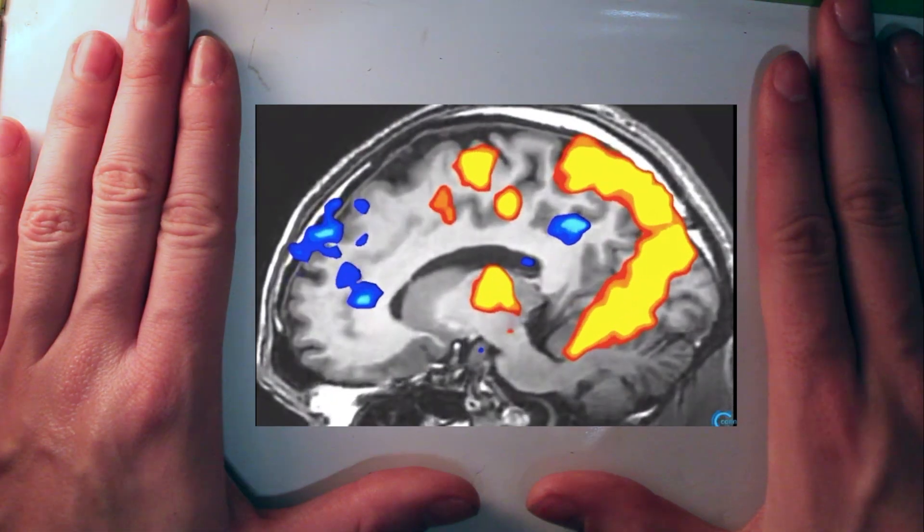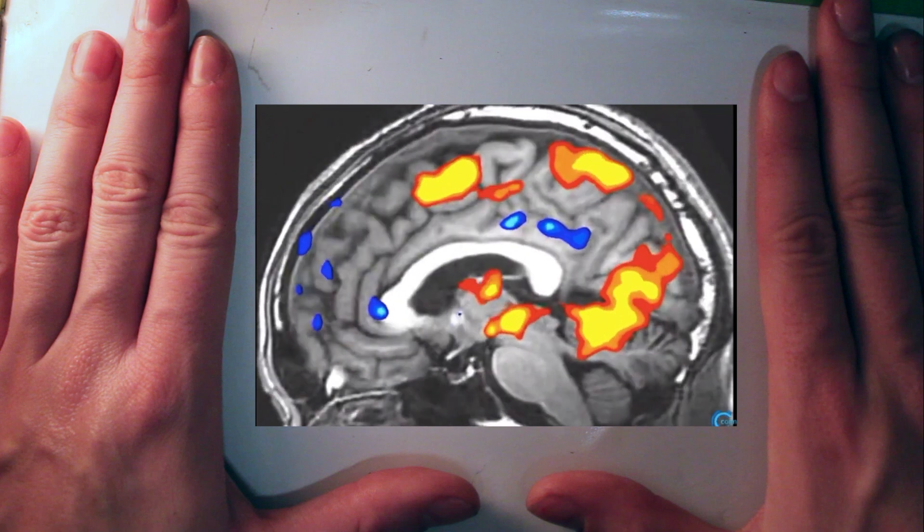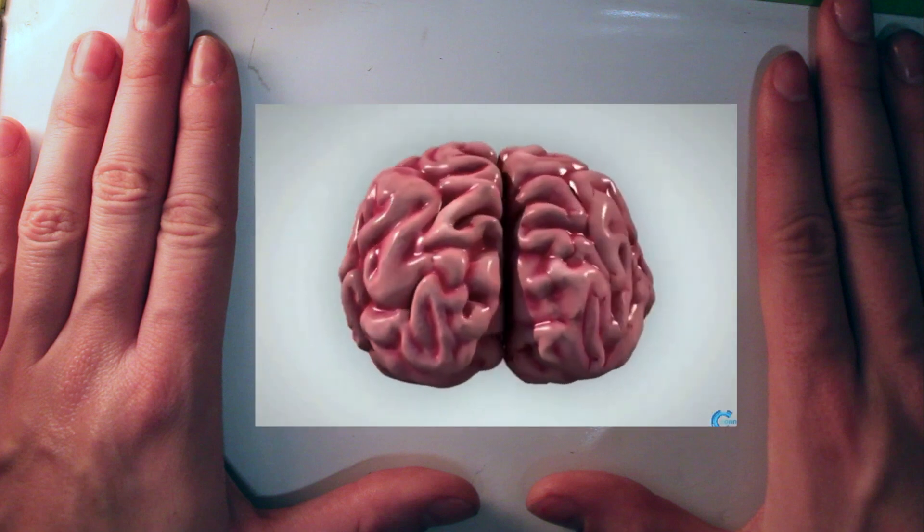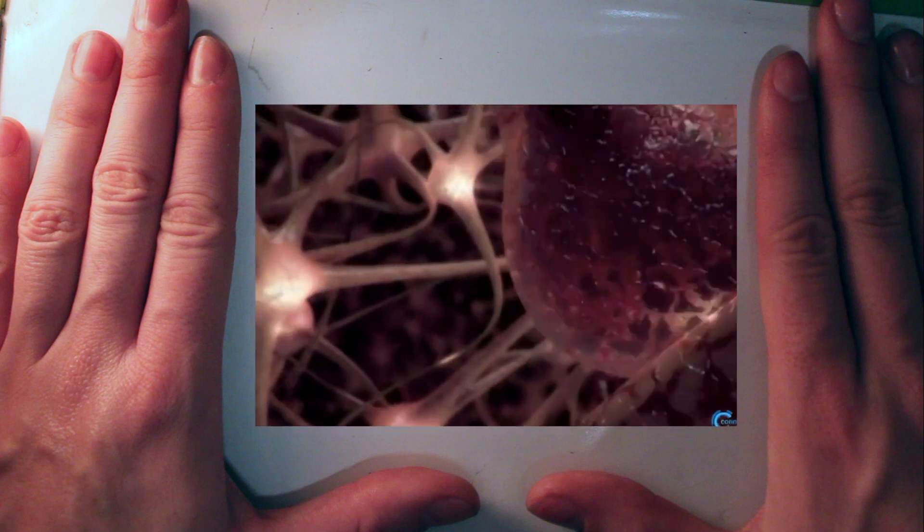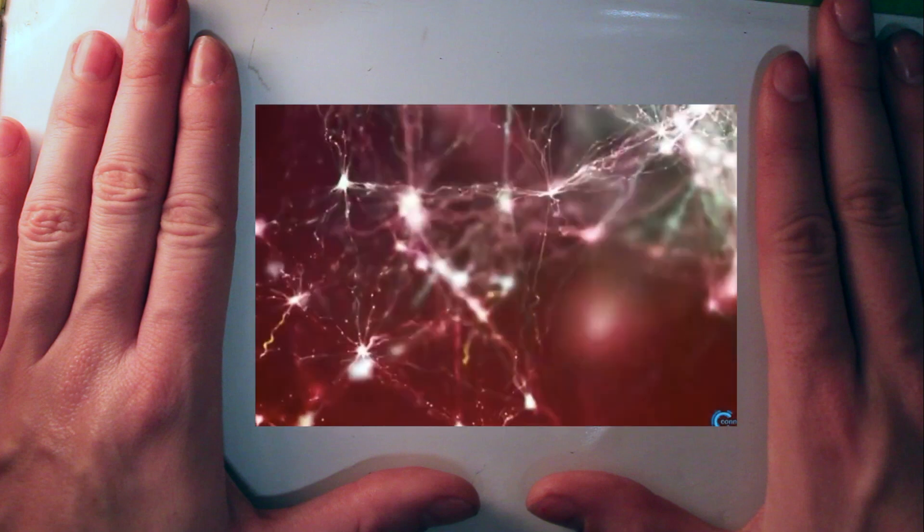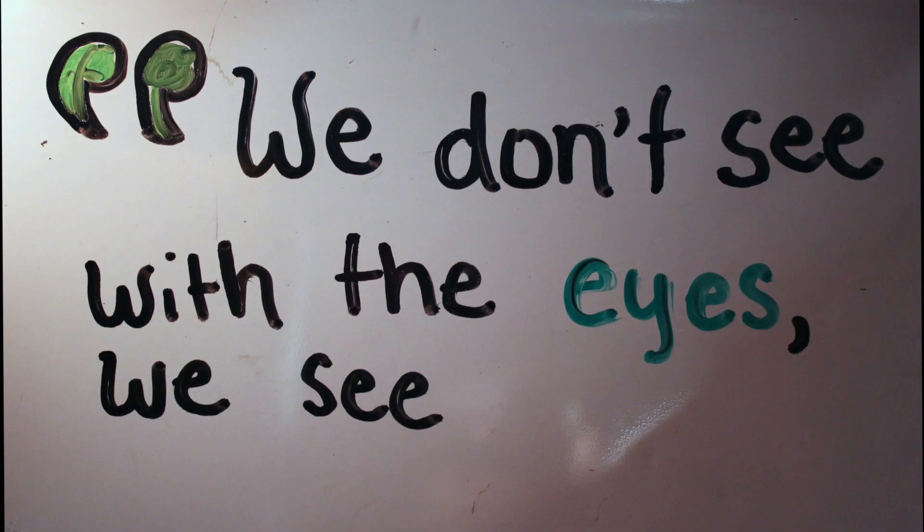This is exactly what is meant by rewiring the brain, which may have once seemed like an idea out of a science fiction novel, but now we're beginning to see that neuroplasticity really isn't so fictitious at all. With the right training, the information perceived from our environment can be translated into a number of possibilities. After all, we don't see with the eyes, we see with the brain.